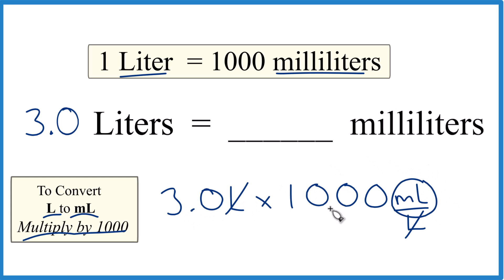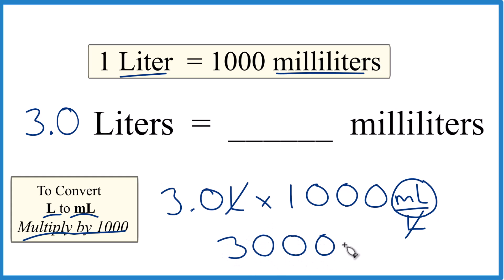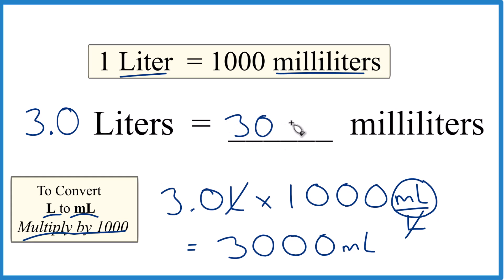So 3.0 times 1,000 is 3,000 milliliters. In answer to our question, 3.0 liters is equal to 3,000 milliliters. This is Dr. B.